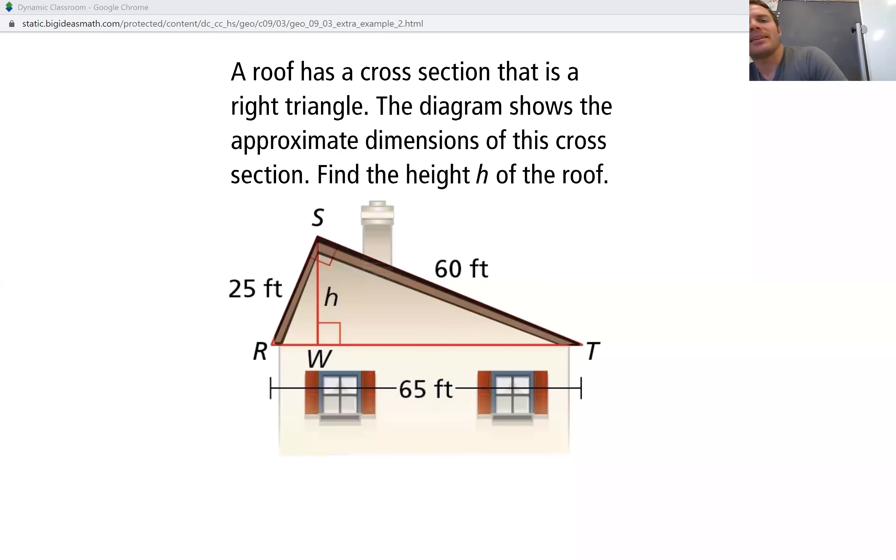Recording again, and this time we're going to do example two. A roof has a cross section that is a right triangle. The diagram shows the approximate dimensions of this cross section. Find the height h of the roof.